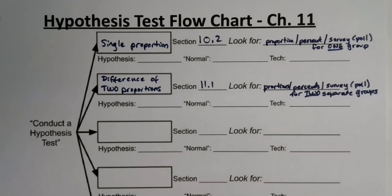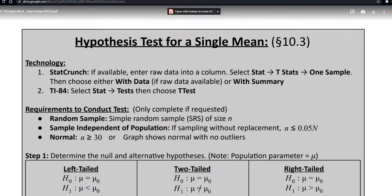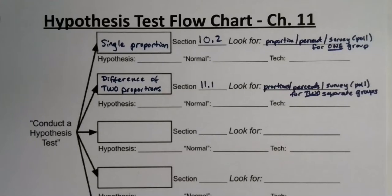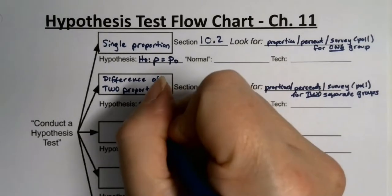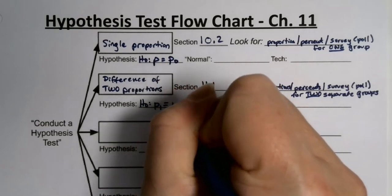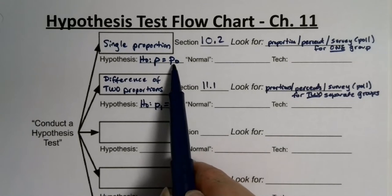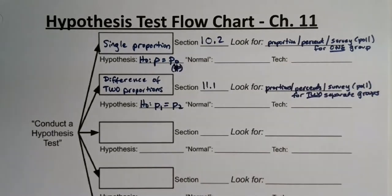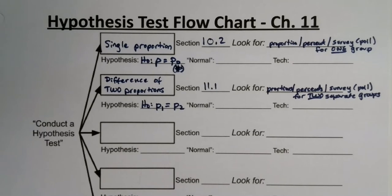Looking at the null hypotheses: for the single proportion test, H-naught is that P equals P-naught, where P-naught is some given numerical value. For the difference in two proportions, H-naught is that P1 equals P2. A key point students get confused on: P-naught is an actual number, whereas P1, P2, and P are just letters representing unknown parameters.